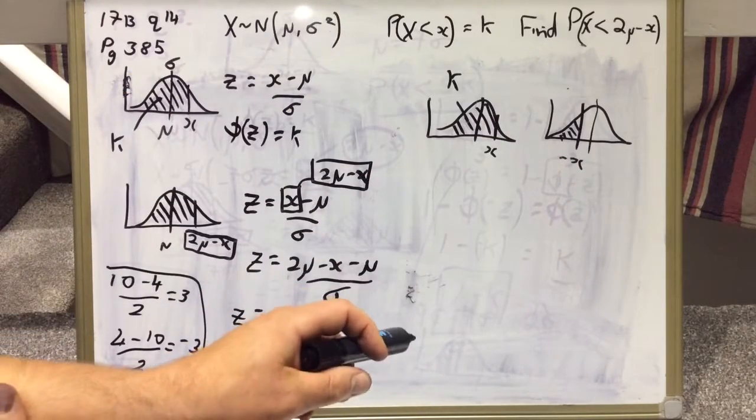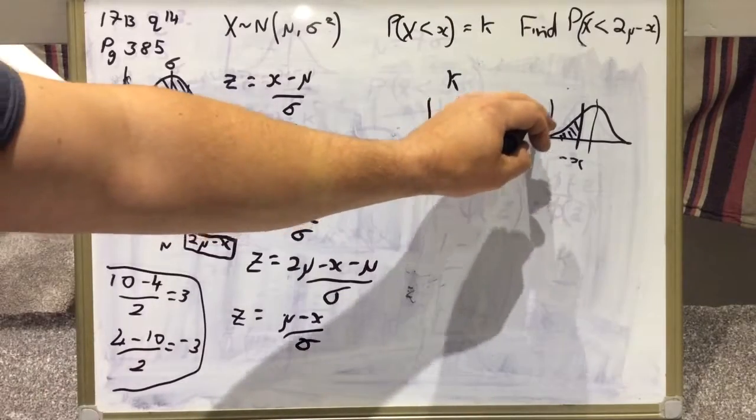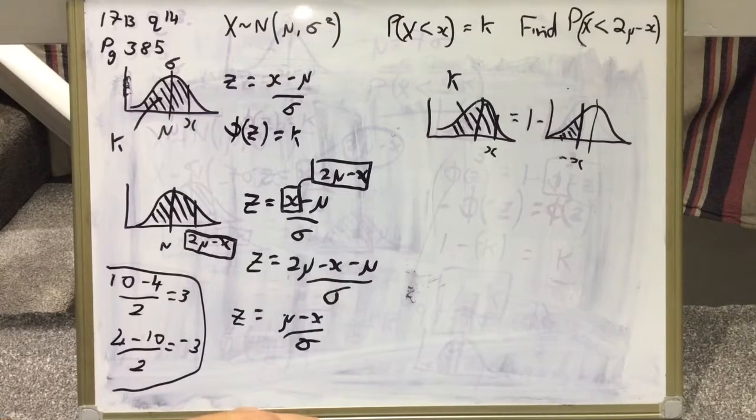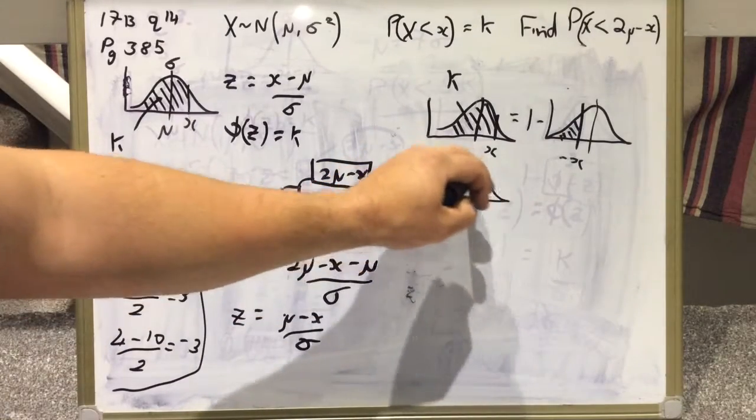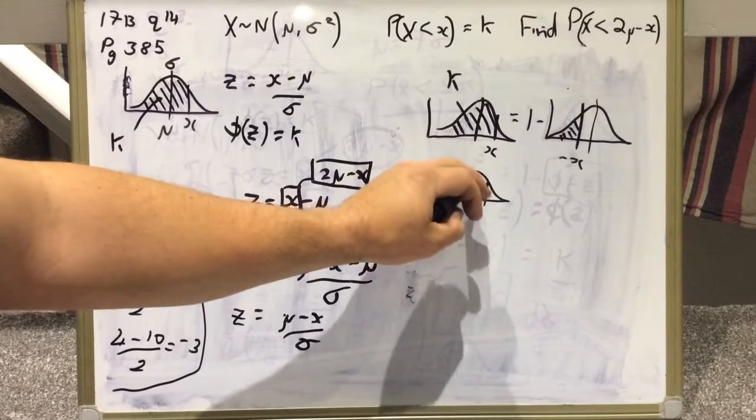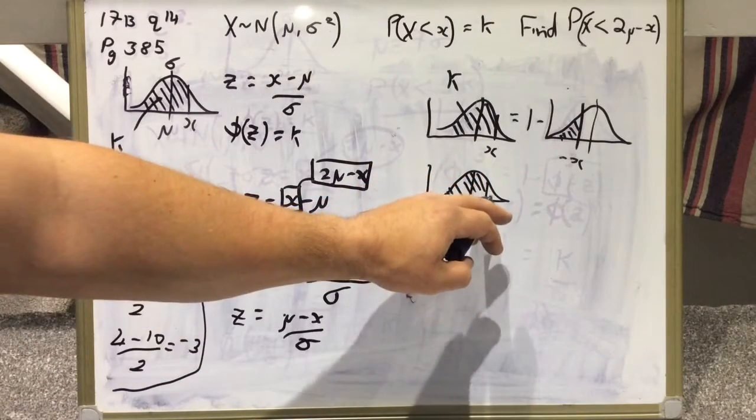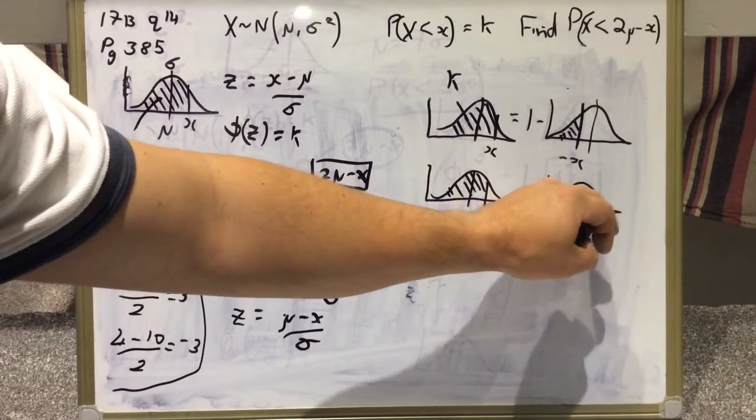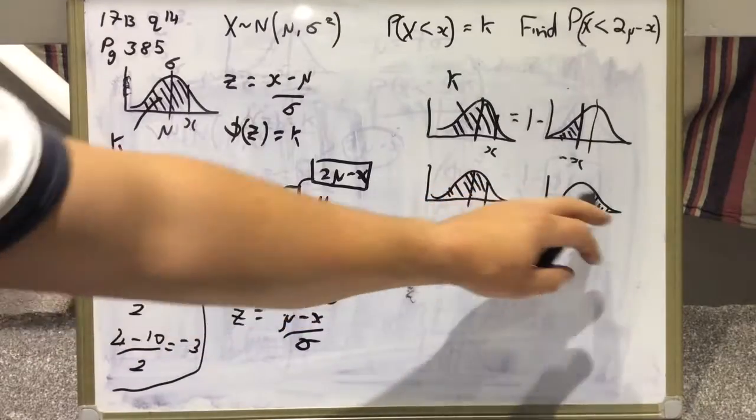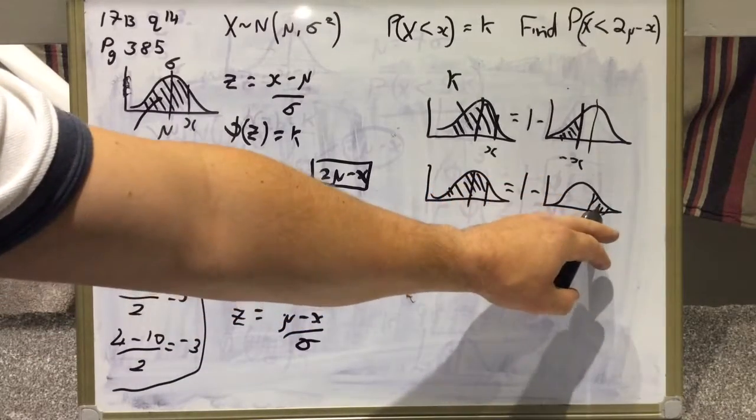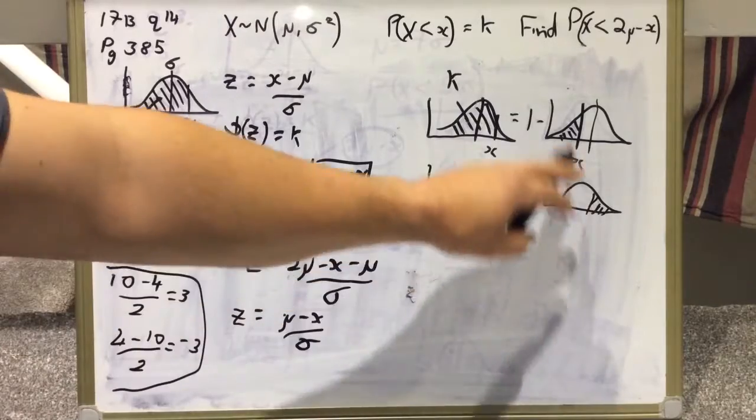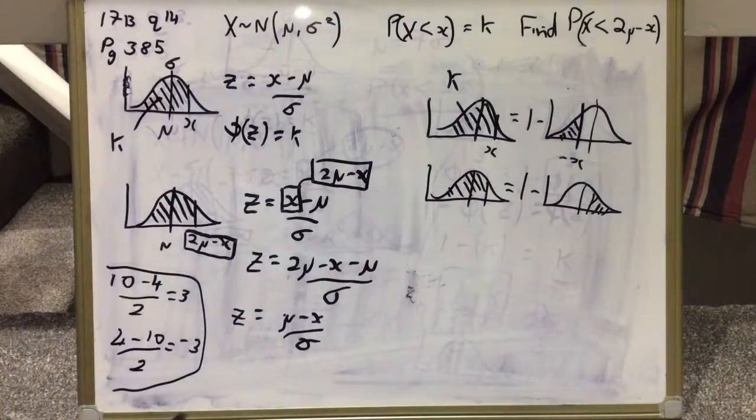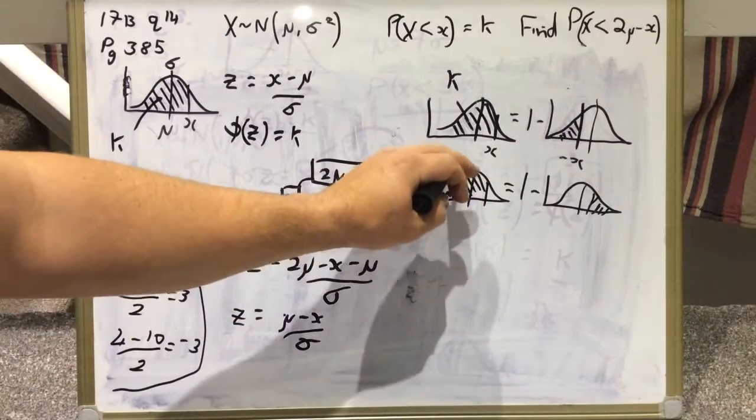They're not currently equal, but if we were to do 1 subtract that area, then they would be the same. The reason for that is because if we consider this area same as above and we consider this little bit here, if we added these two they equal one. So if I did 1 subtract that small area, it's the same as the graph above based on the symmetry of these two graphs. If this area was indeed K, this area here is one take K.